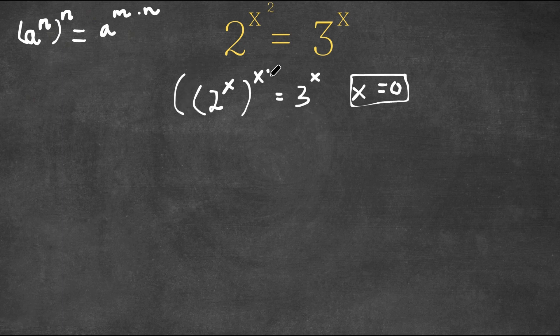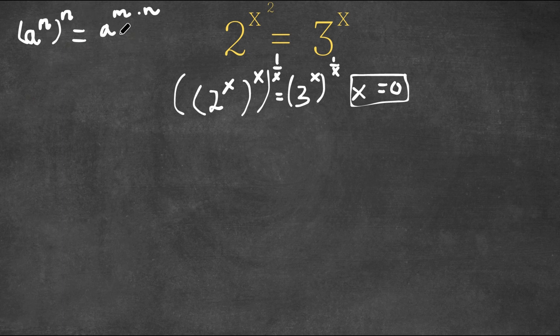So now I'm actually going to take the power of 1 over x on both sides. And remember, a to the power of m to the power of n is equal to a to the power of m times n. 3 to the power of x to the power of 1 over x is going to equal 3 to the power of x times 1 over x. And any number times its reciprocal is simply just 1, so this would just be 3. This is equal to 2 to the power of x.